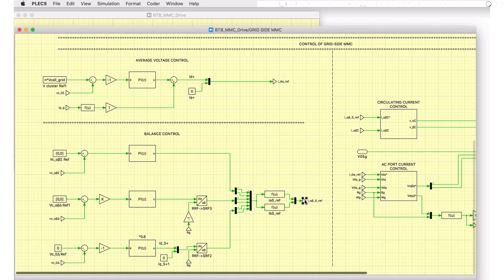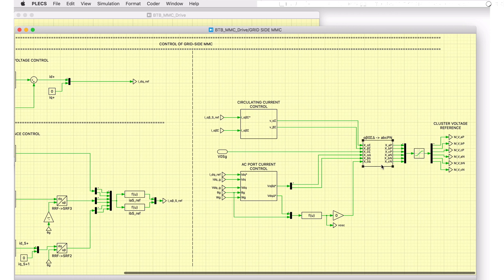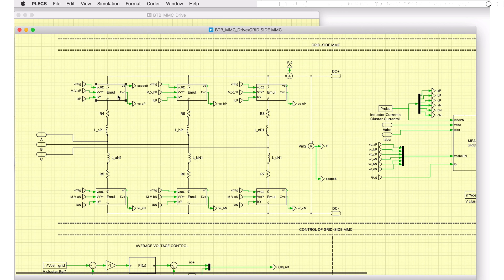The average voltage control of the grid-side MMC provides a current reference to the AC port current controller. The balancing control system provides a reference to the circulating current controller. The outputs from these current controllers, after an inverse transformation, provide the cluster voltage reference value, which is then used for cell balancing.